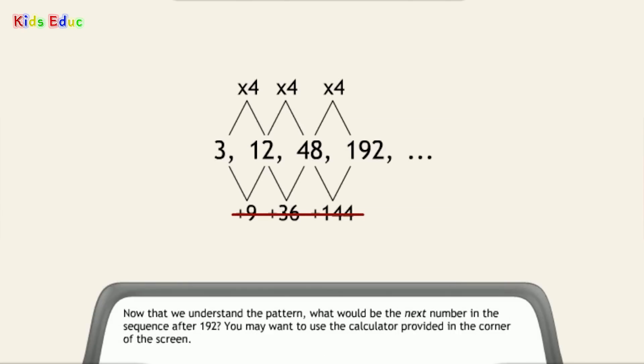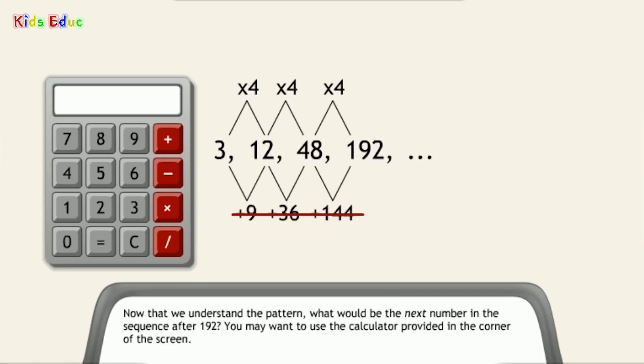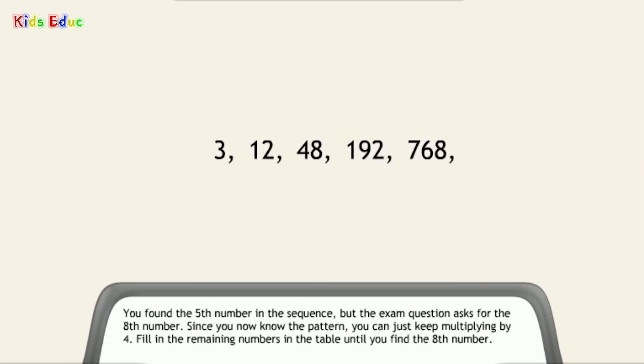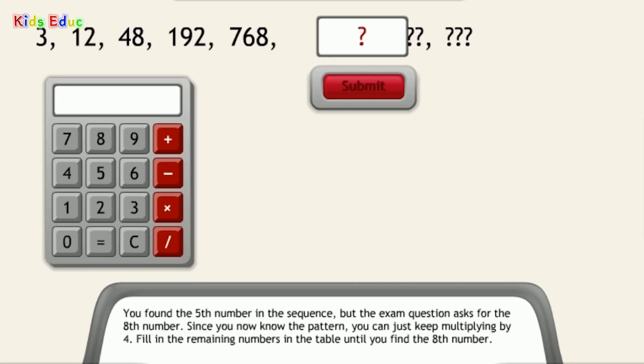Now that we understand the pattern, what would be the next number in the sequence after 192? You may want to use the calculator provided in the corner of the screen. 192 multiplied by 4 equals 768. You got it. You found the fifth number in the sequence, but the exam question asks for the eighth number. Since you now know the pattern, you can just keep multiplying by 4. Fill in the remaining numbers in the table until you find the eighth number.